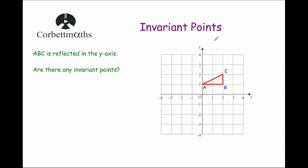So first of all, what are invariant points? When a shape is transformed — so that's translated, rotated, reflected or enlarged — the points of that shape will generally move. But if a point stays in the same position after that transformation, then that is an invariant point. So an invariant point is a point that after transformation stays in the same position as it was when it started — it hasn't moved anywhere.